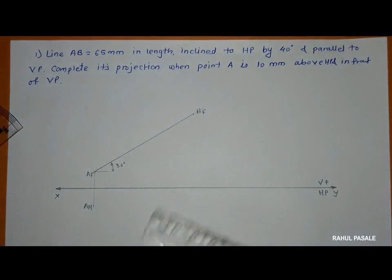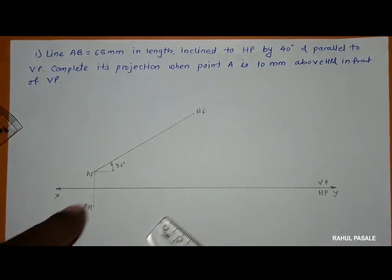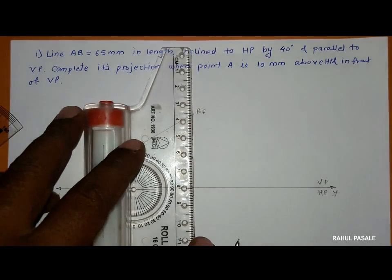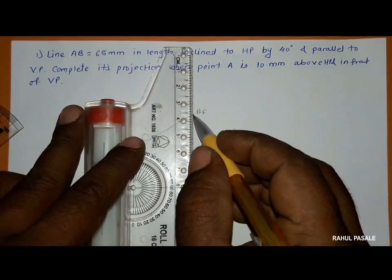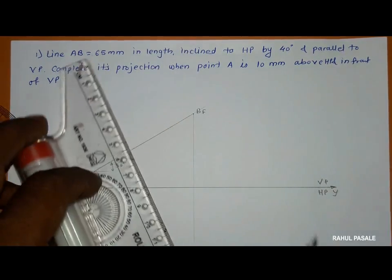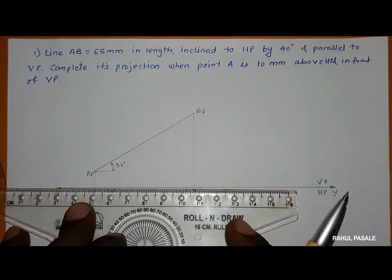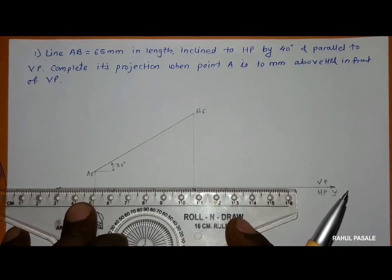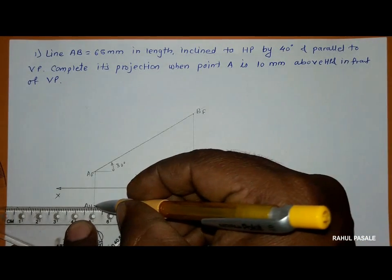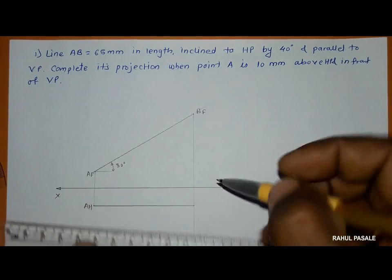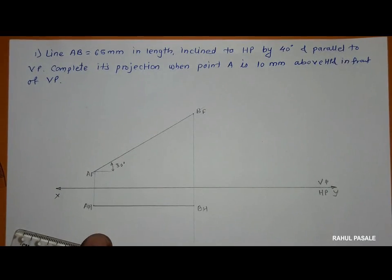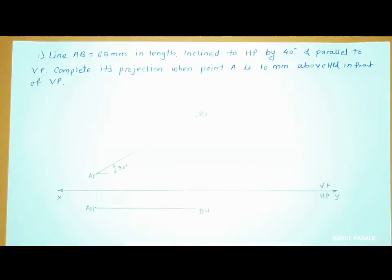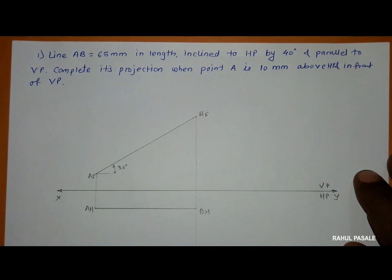As this line is parallel to VP, its top view will be a horizontal line. We take its projection first, then draw a horizontal line parallel to the XY line through AH. This intersects with the B projector to give us BH. This is the front view and top view for this line. Since this line is parallel to VP, this type of line is known as a frontal line.